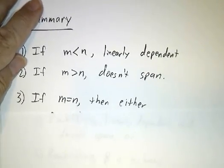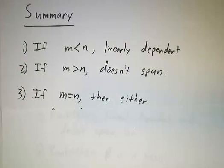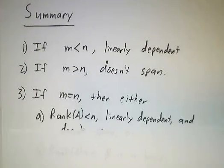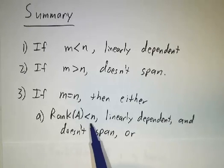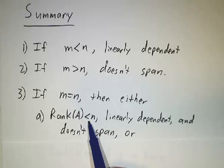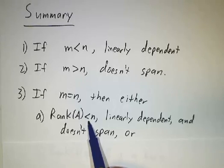And that means, oh, and if there are exactly the right number of vectors, then you have to look at the rank of the matrix. If the rank of the matrix is too small, if it's less than n, you don't have enough pivots to fill up the columns or the rows. So then the vectors are linearly dependent and they don't span.